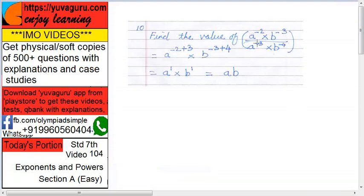So A raised to minus 2 upon A raised to minus 3, so this becomes the same law of indices, so it becomes A raised to minus 2, this minus 3 goes up, so this becomes plus, plus 3. Similarly over here, B raised to minus 3 plus 4, A raised to 1 into B raised to 1 equals to AB.